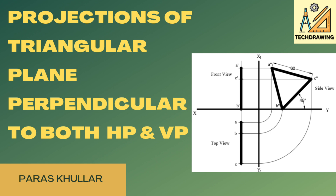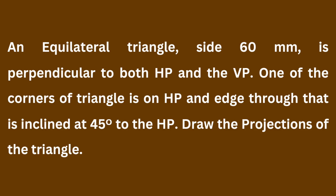Hello students. In this video we will discuss the question of projection of planes when the plane is perpendicular to both the principal planes. The question is: an equilateral triangle of side 60 mm is perpendicular to both HP and VP. One of the corners of the triangle is on HP and the edge through that corner is inclined at 45 degrees to HP. Draw the projections of the triangle.